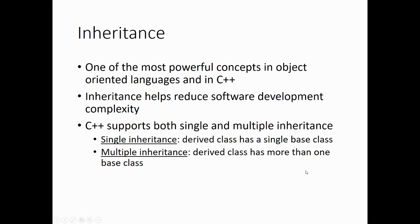Inheritance is one of the most powerful concepts in object-oriented programming languages, in C++ in particular. It helps us reduce software development complexity, particularly if we're building larger applications. C++ itself supports both single and multiple inheritance. Single inheritance is where the derived class has a single base class or a single parent class. Multiple inheritance is where the derived class has more than one base class.